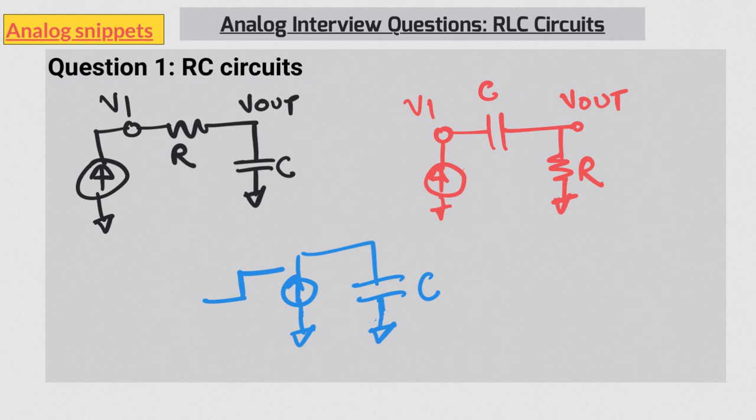I'll come back to these questions in a minute but let me mention another question that I sometimes ask. And I ask the ramp response of RC circuit. Assume that the capacitor is discharged initially and the input is a steady ramp voltage. Plot the Vout. Again this is a question where a lot of people struggle. I also ask to plot the current of this ramp response.